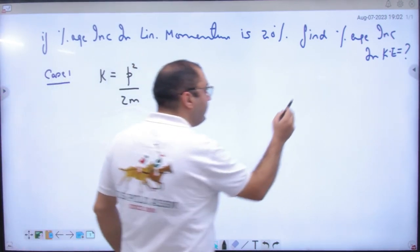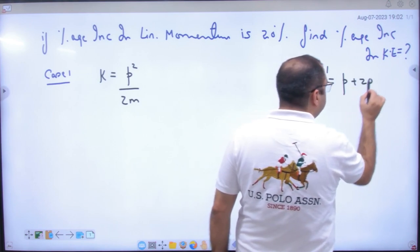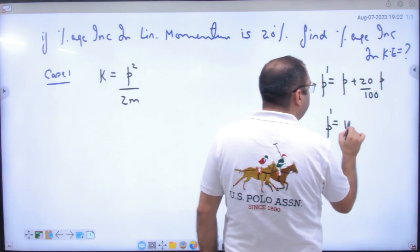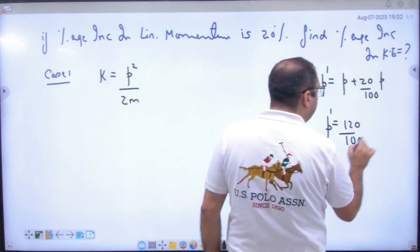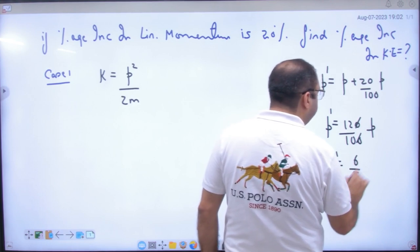Baad mein kya hua? Momentum increase ho gaya kitna? Twenty percent increase ho gaya. To kitna ho gaya? One twenty by hundred into p ho gaya. To p dash ki value kya ho gai? Six upon five into p ho gai.